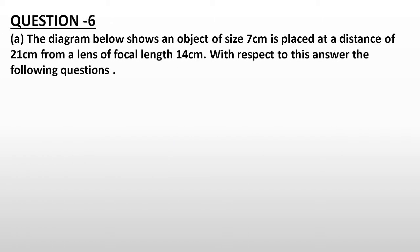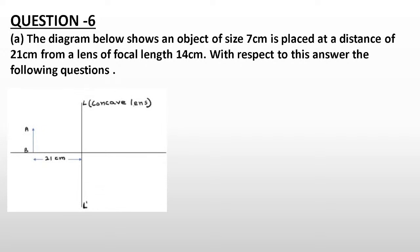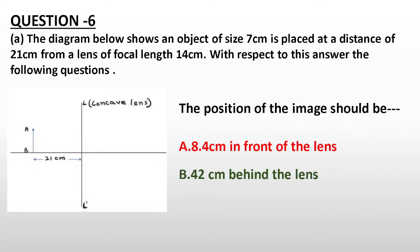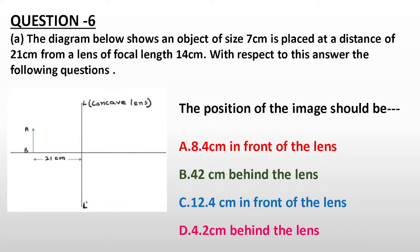Going ahead, question number six. The diagram below shows an object of size 7 cm placed at a distance of 21 cm from a lens of focal length 14 cm. The position of the image should be dash. A, 8.4 cm in front of the lens; B, 42 cm behind the lens; C, 12.4 cm in front of the lens; D, 4.2 cm behind the lens.